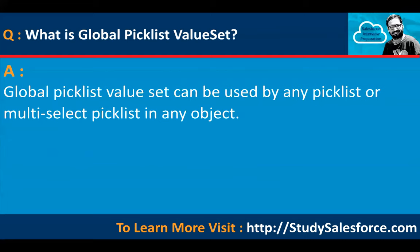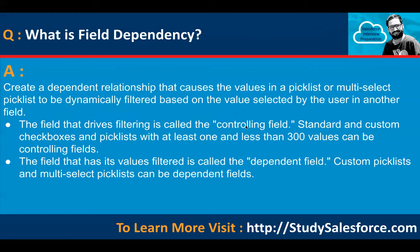What is a global picklist value set? A global picklist value set can be used by any picklist or multi-select picklist in any object. For example, if you want to create a picklist with weekdays under several objects, you can create a global picklist named 'Weekday' and use that global picklist under any object wherever you want to create a picklist or multi-select picklist.